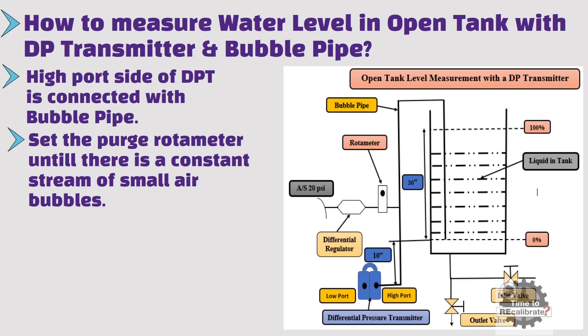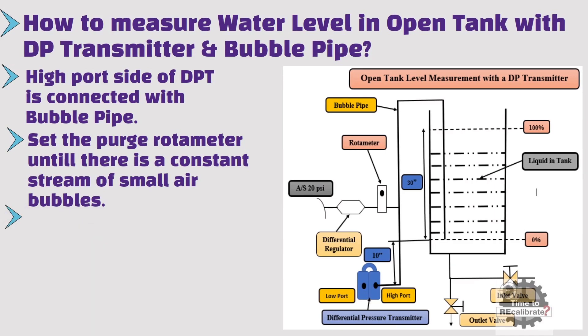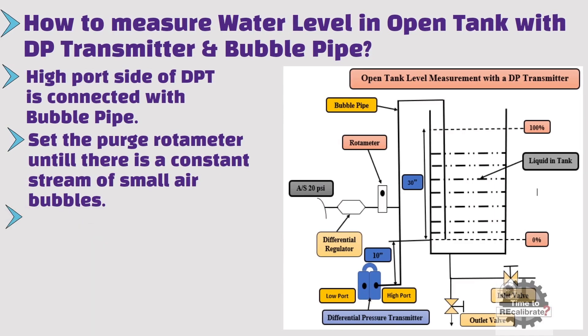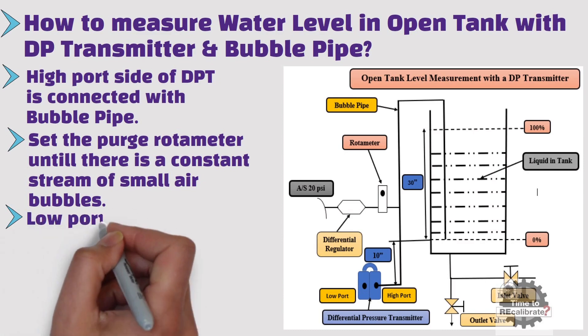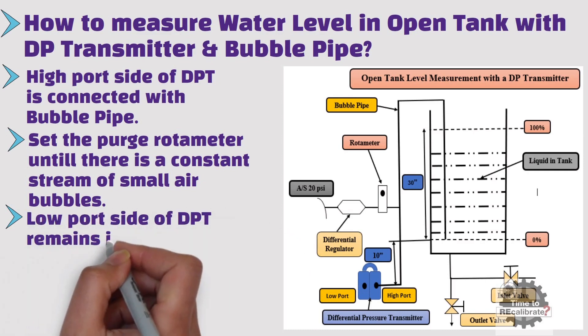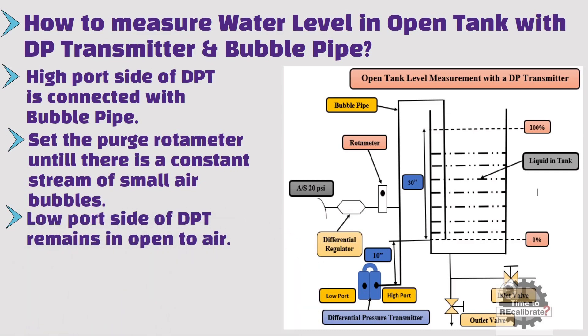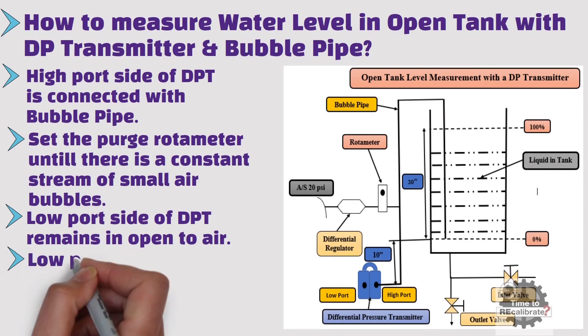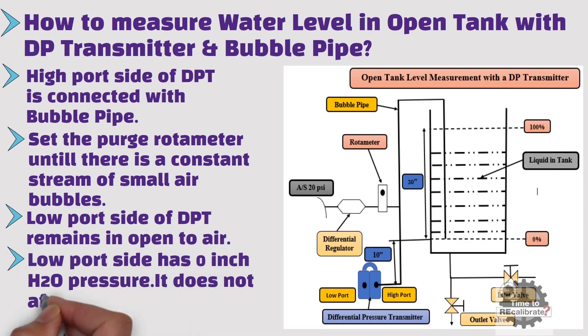So, even though the transmitter is installed 10 inches below from the 0% baseline, it does not affect the calibration range. As you can see from the picture, the low port side of the DPT remains open to air — in other words, it does not connect with anything. Therefore, the low port side has 0 inch H2O pressure, and it does not affect the calibration range.